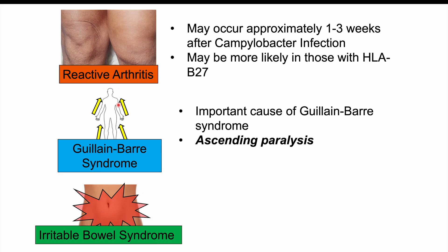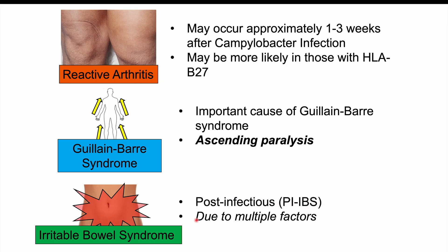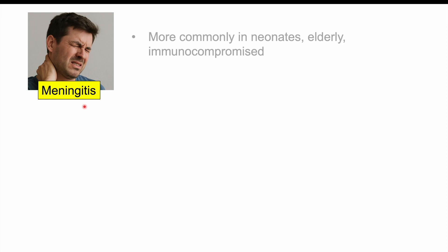Irritable bowel syndrome can occur in some patients who have had a previous Campylobacter infection — what we call post-infectious irritable bowel syndrome, or PIBS. This is likely due to multiple factors including mucosal damage, changes in gut microbiome, hypersensitivity of intestinal tissues, altered gut motility, and continuing low-grade inflammation. Meningitis — inflammation of the meninges covering the brain and spinal cord — can also occur, presenting with fever, headache, and stiff neck. It is more common in neonates, the elderly, and the immunocompromised, and is more specific to Campylobacter fetus, which is able to cross the blood-brain barrier.